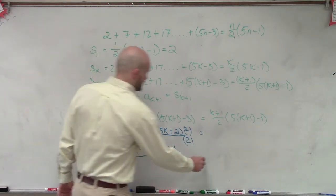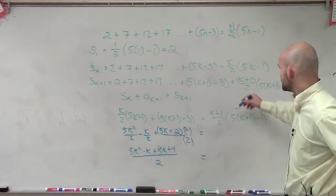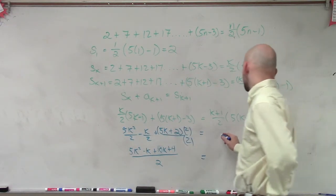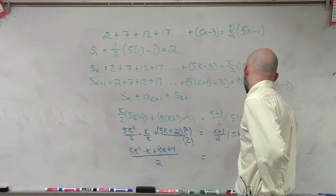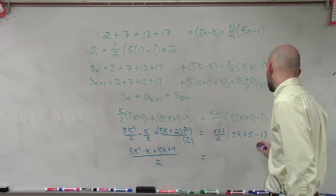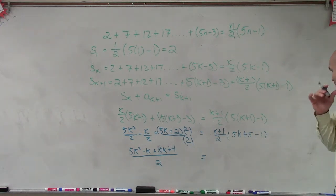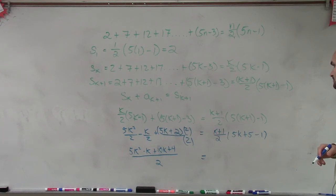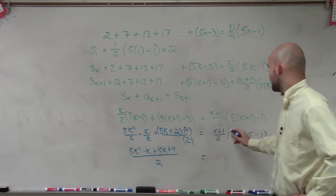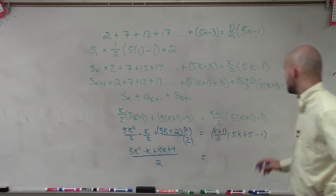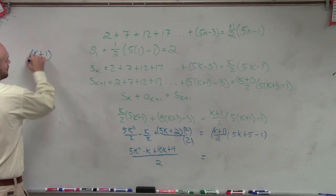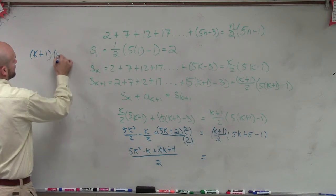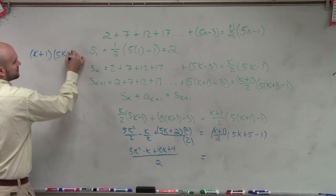All right, and we'll get to that in a second. Equals, then let's distribute this so I can do 5k. So this would be k plus 1 over 2 times 5k plus 5 minus 1. Again, I'm going to want to do the, then I'd have to multiply this.